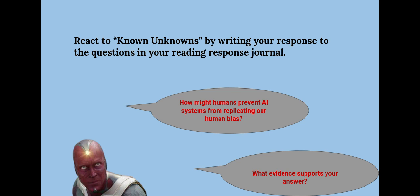Now you will react to Known Unknowns by writing your response to the questions in your reading response journal. How might humans prevent AI systems from replicating our human bias? What evidence supports your answer? You will have 5 minutes to complete this activity.